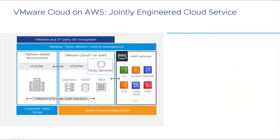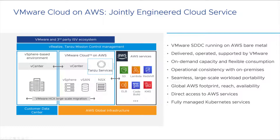VMware Cloud on AWS is a service that's delivered, operated, and supported by VMware. We're using the global AWS footprint to quickly spin up software-defined data centers on AWS bare-metal hosts. Customers benefit from the operational consistency with their on-prem VMware environments while utilizing the benefits of public cloud.